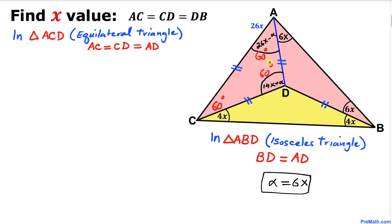Now let's focus on this angle 60 degree, which is same as 14X plus alpha. Let me go ahead and write it down, 14X plus alpha equal to 60 degrees.